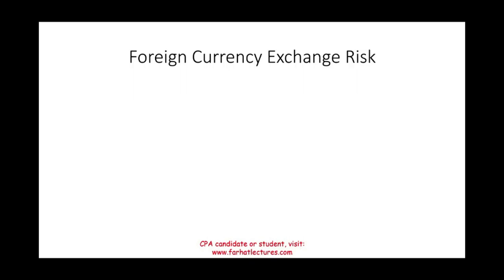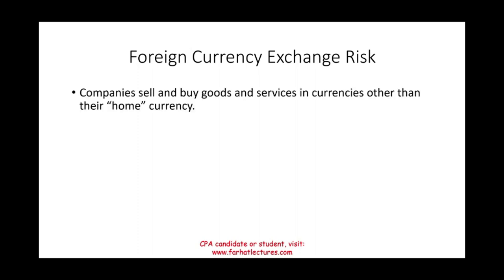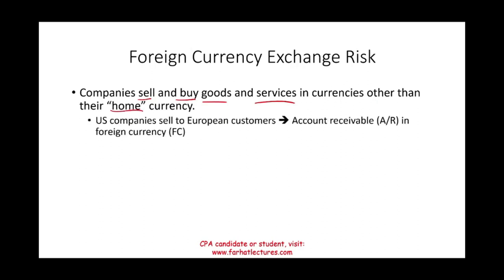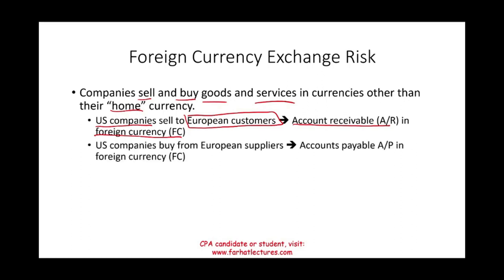Welcome to this session on foreign currency exchange risk. Companies, entities, and individuals sell and buy goods and services in currencies other than their home currency. For example, a U.S. company selling to European customers may have an accounts receivable in euros, while buying supplies from Europe creates an accounts payable denominated in a foreign currency. In this session, AR means accounts receivable, AP means accounts payable, and FC means foreign currency.